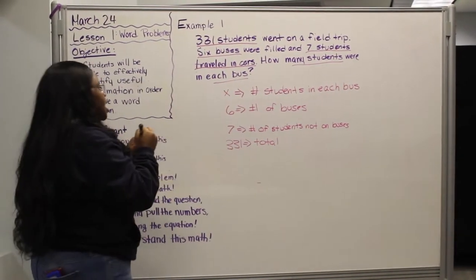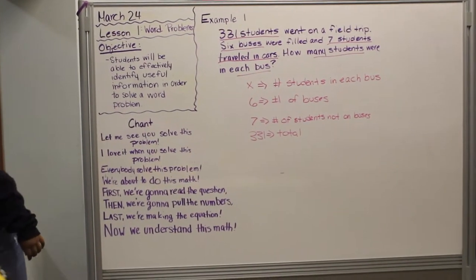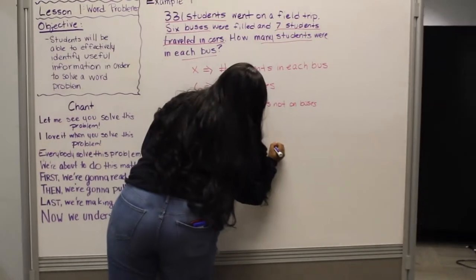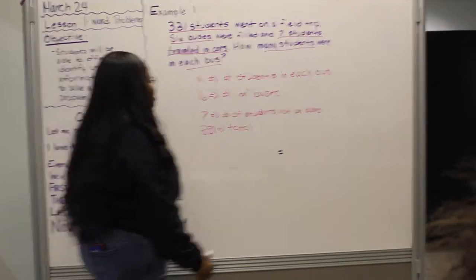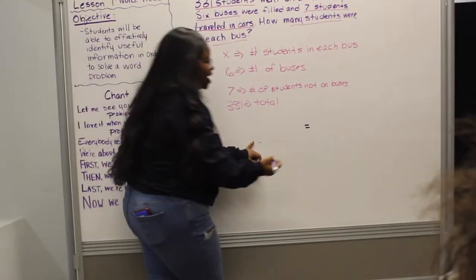So how do you guys think we should set up this equation? Equal. Equal. Equaling the total number of students. Okay. So we're going to put what number on this side? 331. Good job.